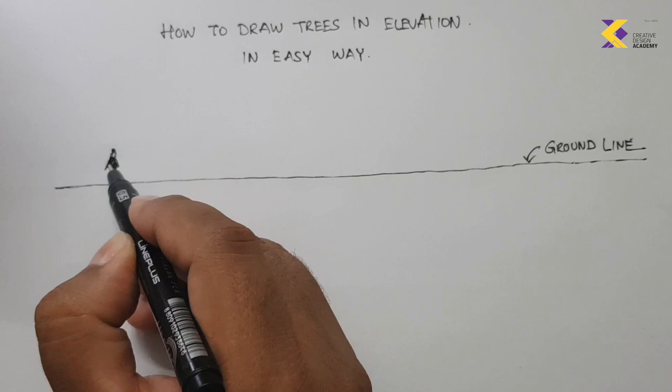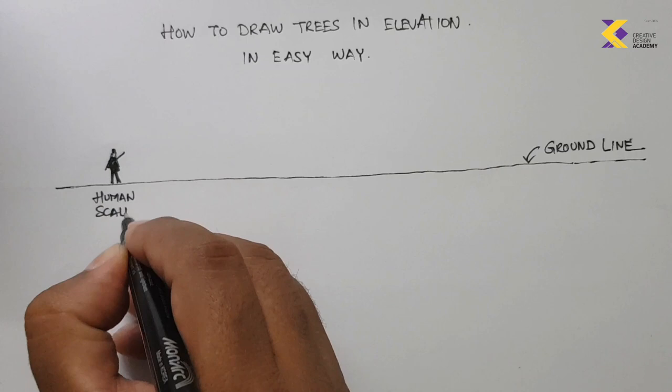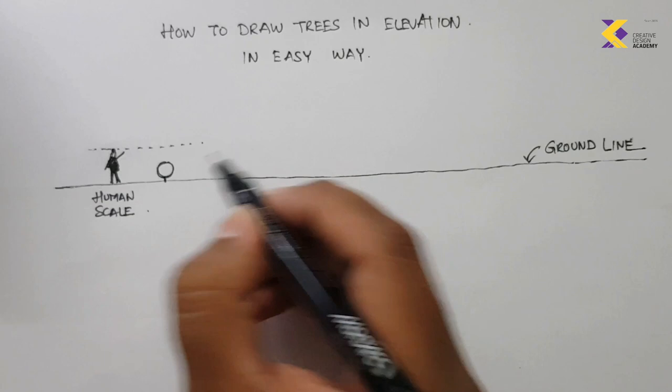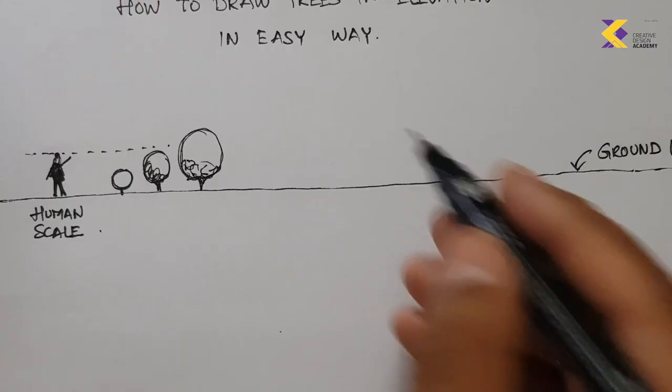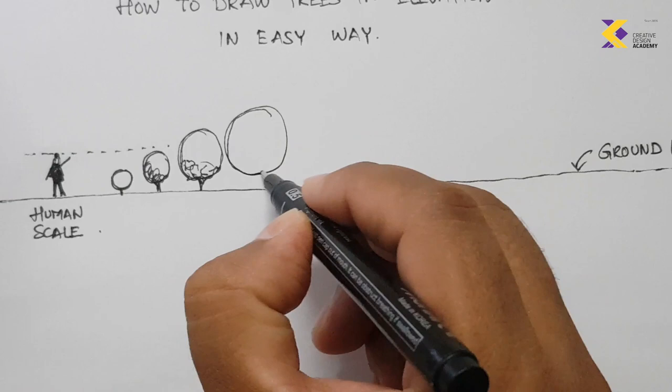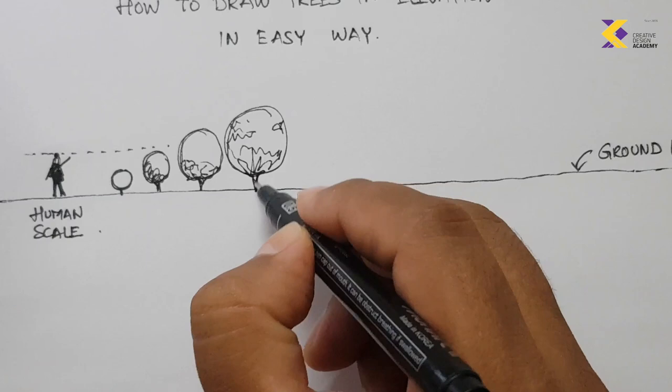The human figure is assumed at five feet or about one and a half meters tall. We start with a smaller shrub at half the height of the human figure, then a slightly bigger shrub — a small plant or planter.